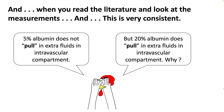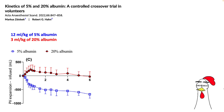5% albumin has not been shown to pull fluid into the intravascular compartment from the extracellular compartment, while 20% albumin does pull fluid into your intravascular compartment — and we'll see why. One thing to be very careful about when reading the literature is the difference between plasma volume expansion and pull from any IV fluid. The net pull from any IV fluid will be equal to your plasma volume expansion minus the infused volume. So when somebody reports plasma volume expansion, make sure that you subtract the volume infused to get the real pull from the intravascular compartment.